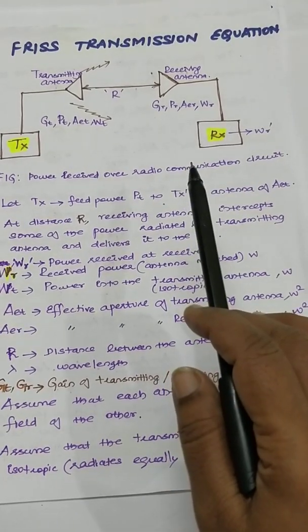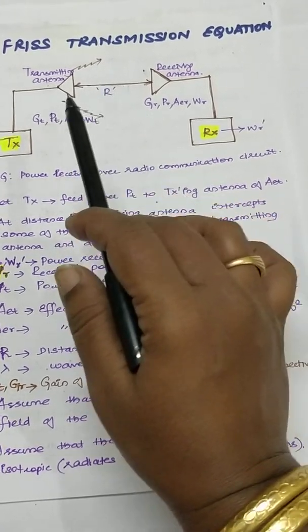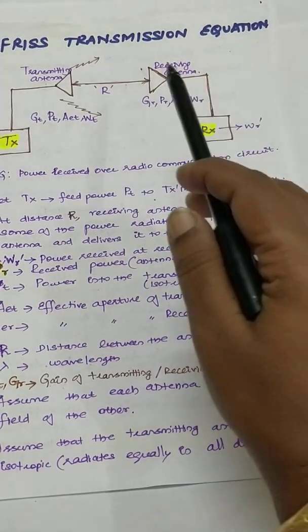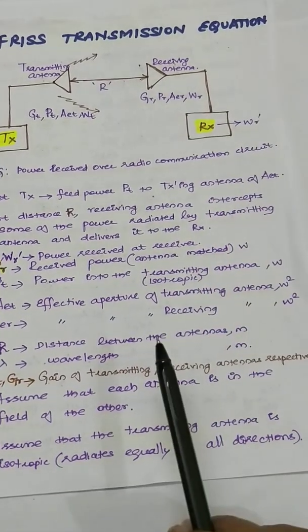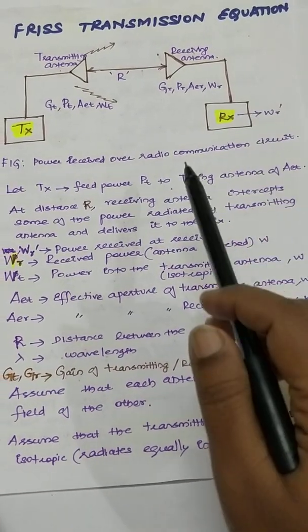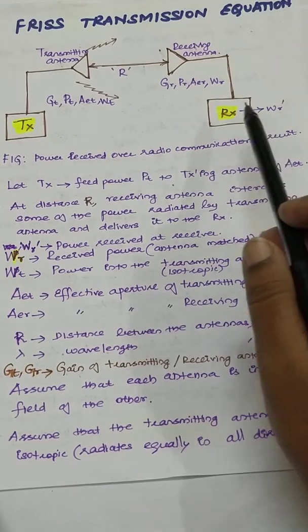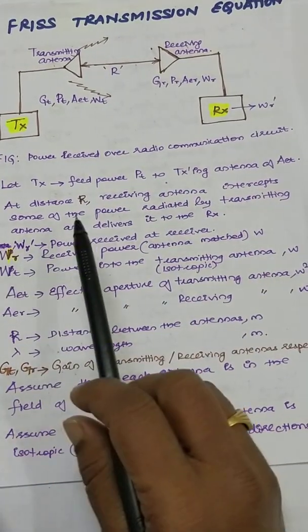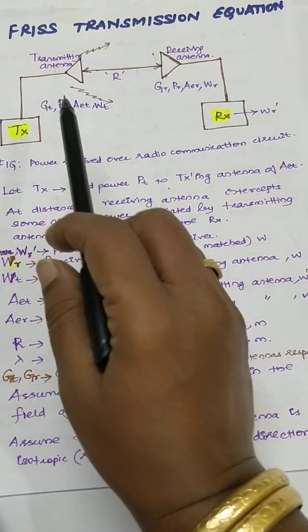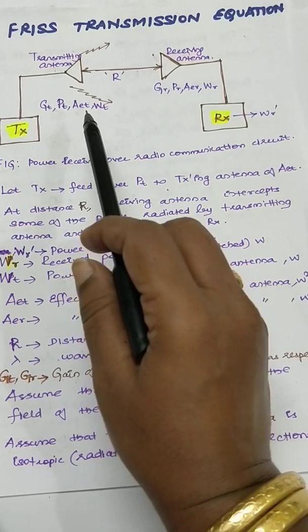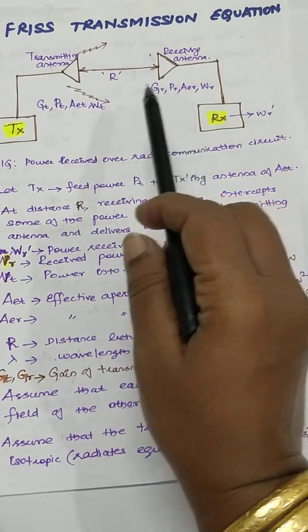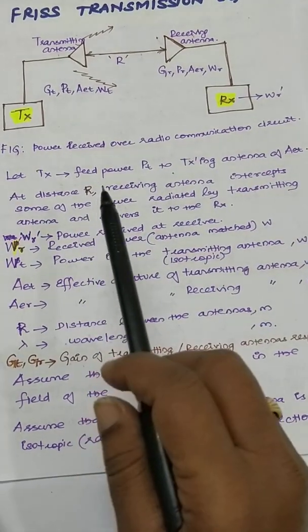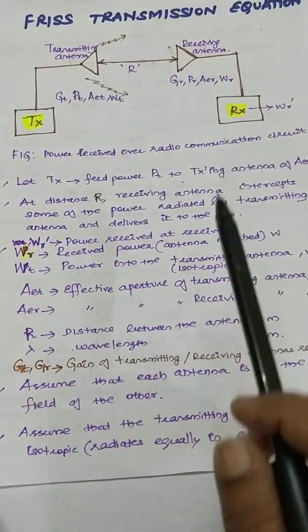The transmitting antenna and the receiving antenna are separated by a distance of r meters. There are various parameters defined in terms of the transmitter and the receiver. WR' is the power received at the receiver, and WR is the power at the receiving antenna terminal. WT is the power into the transmitting antenna. AE is the effective aperture — AET for the transmitting antenna and AER for the receiving antenna. GT and GR define the gain of the transmitting and receiving antennas. R is the distance between the antennas in meters, and lambda is the wavelength in meters.